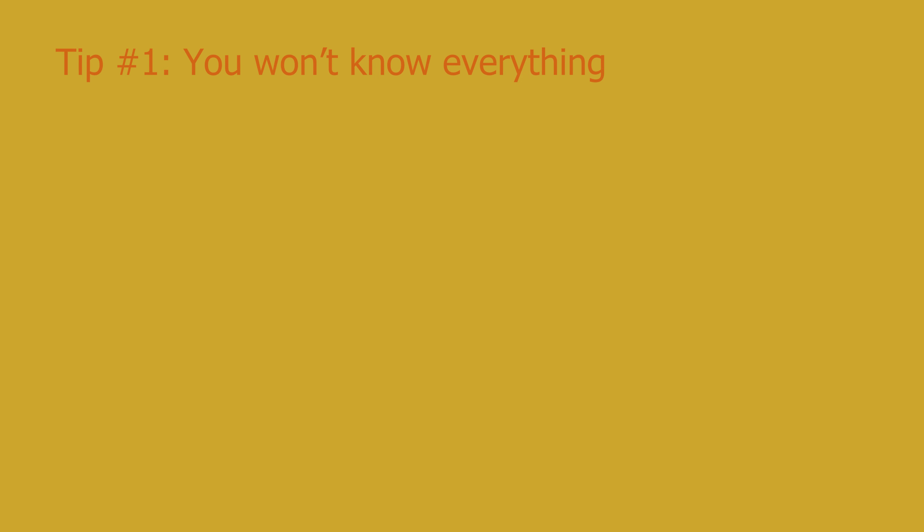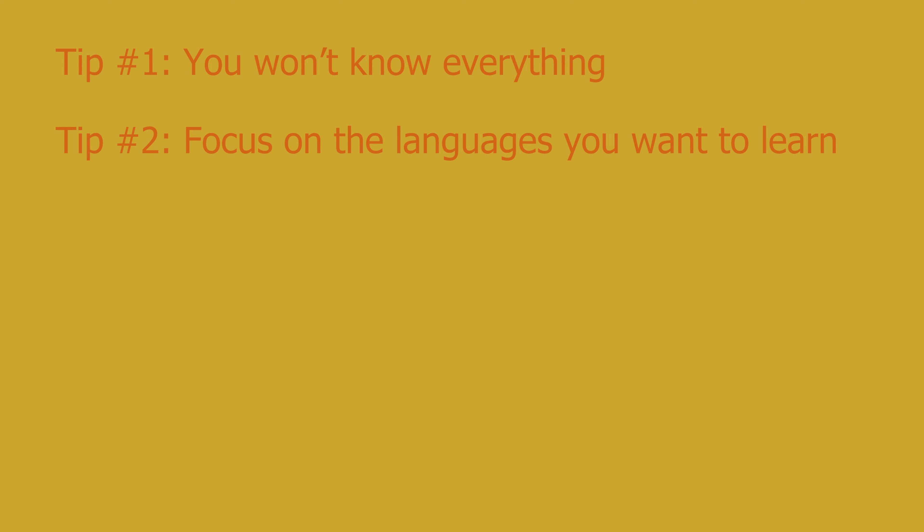Here are some final tips for coding. Tip 1: You won't know everything. There are so many languages and so many ways to code that some people might know more than you, but don't be put off by that — by practicing, you can get better and better. Tip 2: Focus on the languages you want to learn. Since there are thousands of coding languages, focus on no more than three at a time, as it takes a long time to remember everything in a language. Tip 3: Never copy code. Don't steal someone's code. If you like something, try to replicate it or ask for permission to use it, but never copy. Use other people's code as inspiration.